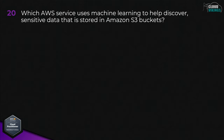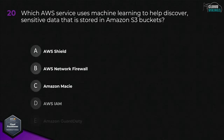Question twenty: which AWS service uses machine learning to help discover sensitive data that is stored in Amazon S3 buckets? Options are: A, AWS Shield; B, AWS Network Firewall; C, Amazon Macie; D, AWS IAM; or E, Amazon GuardDuty. The correct answer would be C, Amazon Macie.